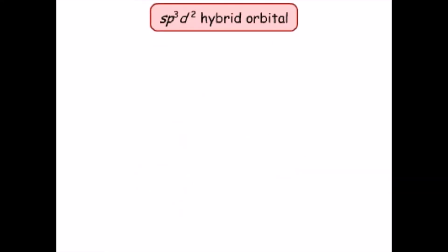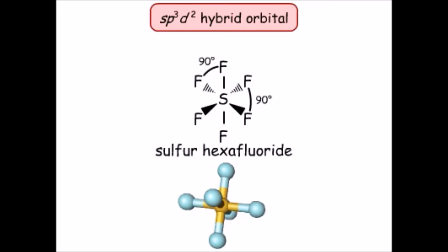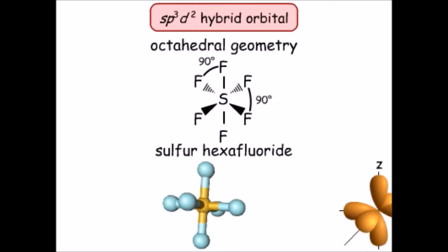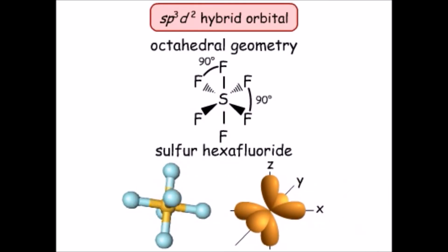The SP3D2 hybrid orbital is a combination of one S, all three P orbitals, and two D orbitals. One example of a molecule with SP3D2 hybridization is sulfur hexafluoride, which has octahedral geometry. The SP3D2 hybrid orbitals of the sulfur atom make a shape like two square pyramids joined at their square bases.